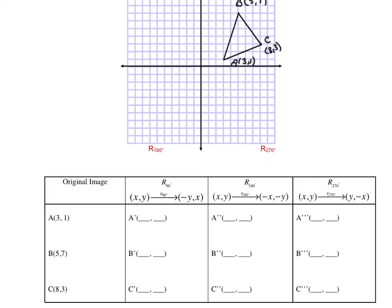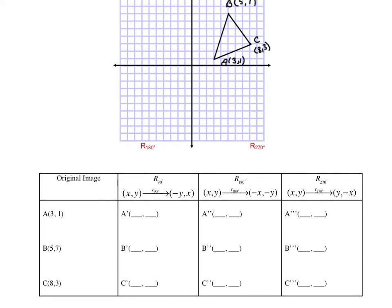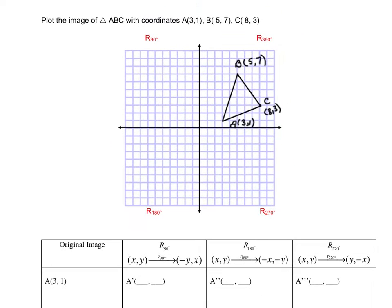Let's do some examples. So here's our original image and I want to plot this as a rotation of 90, 180, and 270. So we're going to follow this procedure. So we're going to do our rotation of 90 degrees first.